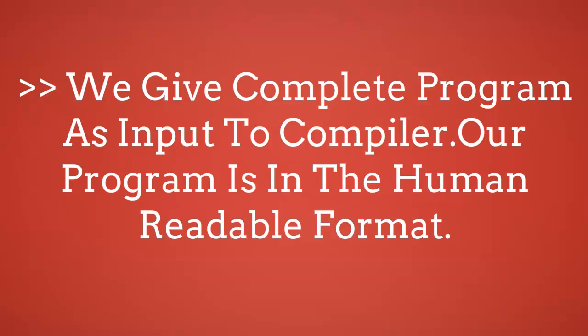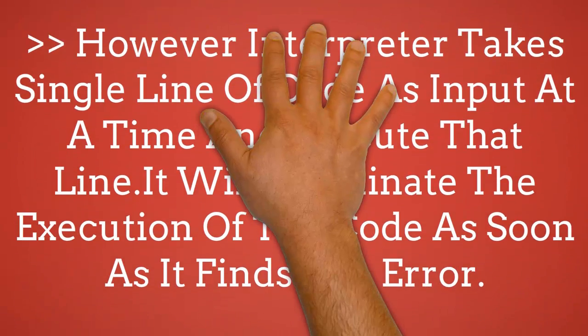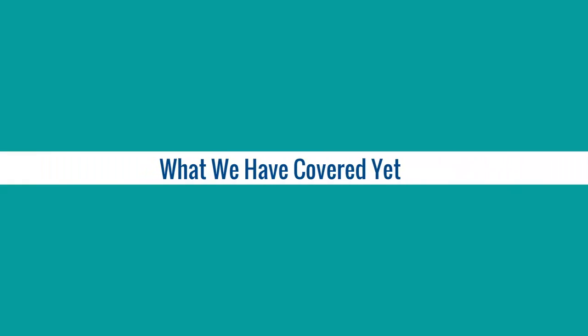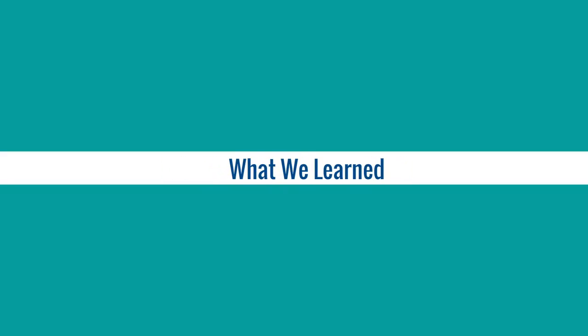In short: we give a complete program as input to the compiler, and our program is in human-readable format. The interpreter takes a single line of code as input at a time, executes that line, and terminates code execution as soon as it finds an error.